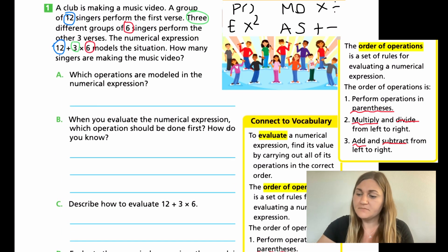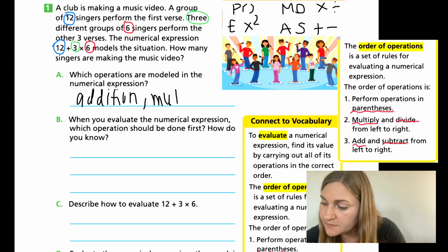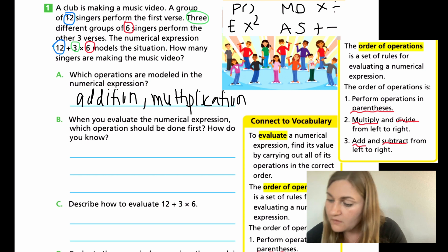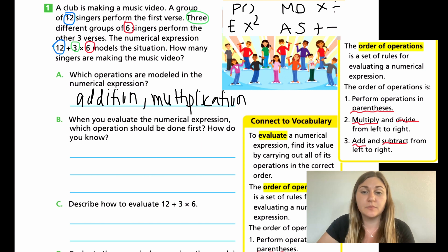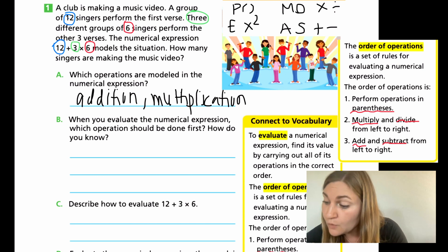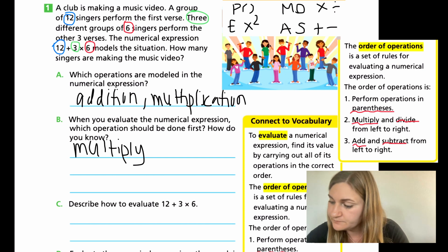For part a, the operations modeled in the expression are addition and multiplication. For part b, which operation should be done first? Looking at our notes, there are no parentheses, so we move to multiplication or division. We have a multiplication, so we do that first. The operation that should be done first is multiplication, because I followed the rules of order of operations.